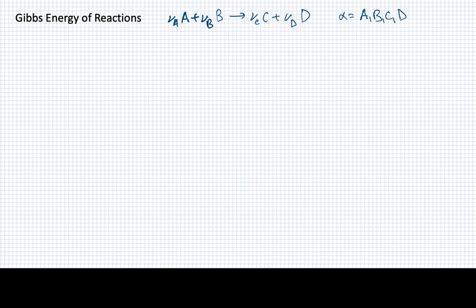We now move beyond heats of reaction to consider more tangible thermodynamic outcomes for reactions. In particular, what we're going to be interested in is the Gibbs energy of reactions. The hypothetical reaction we'll be talking about through much of this has reactants A and B and products C and D. We'll also use a summation index alpha that basically stands for these various species in the solution.